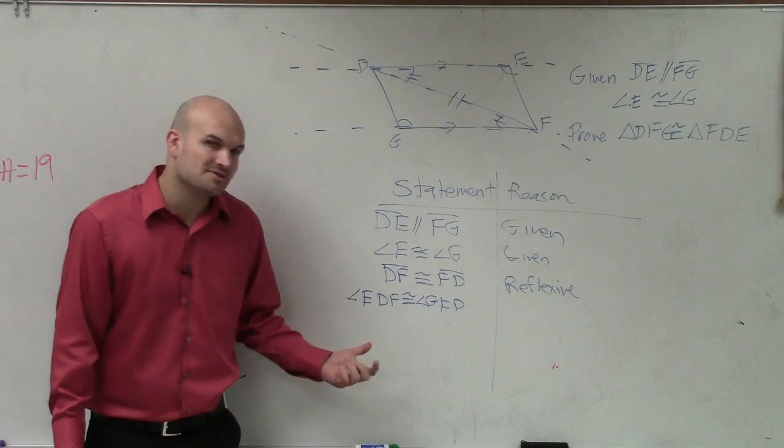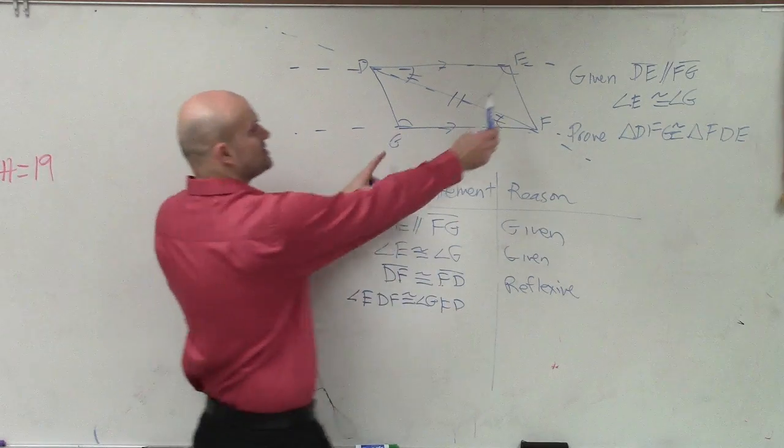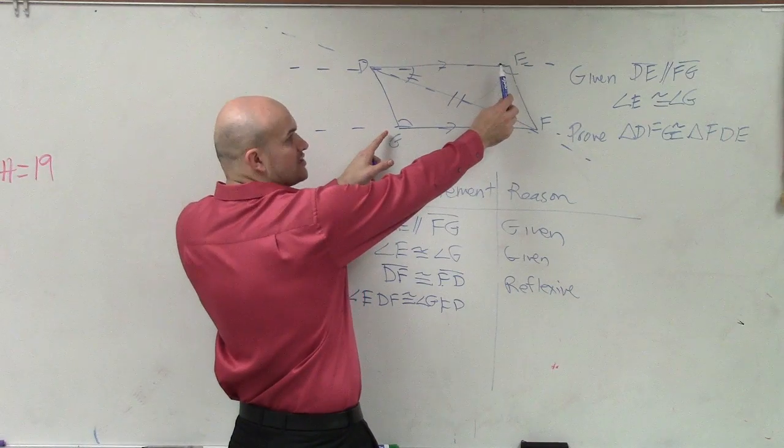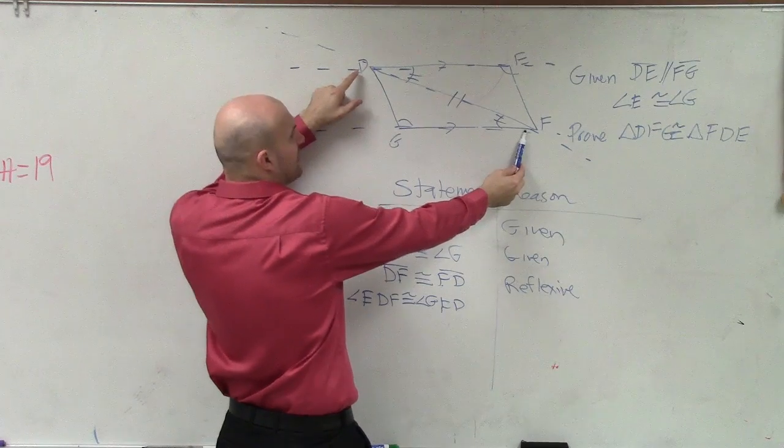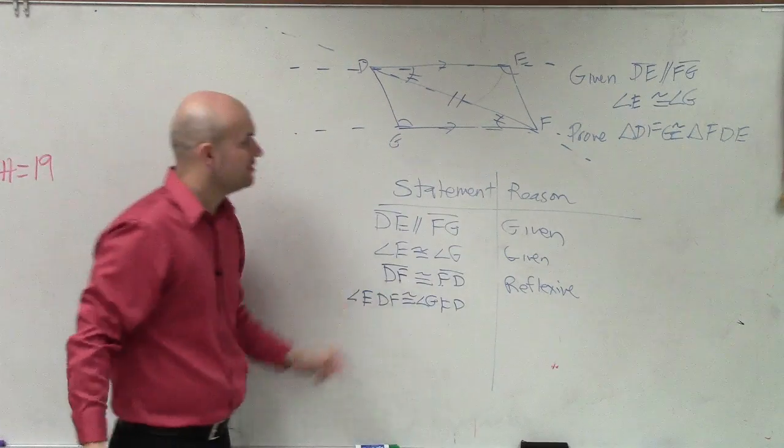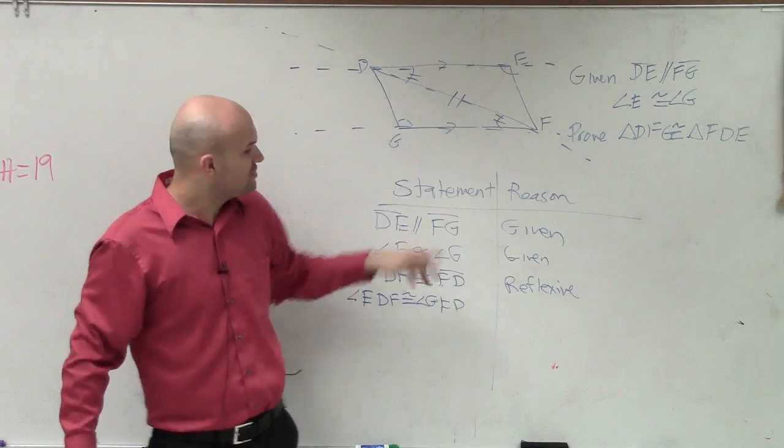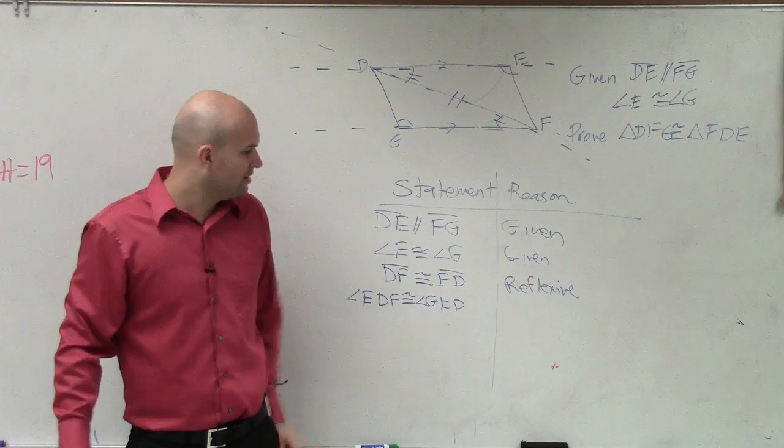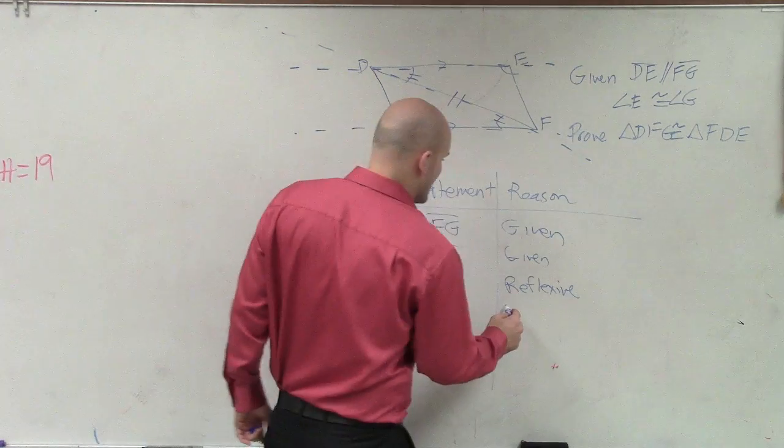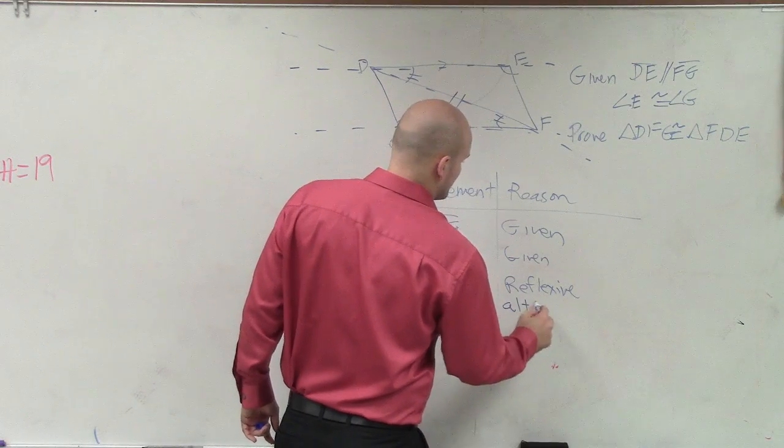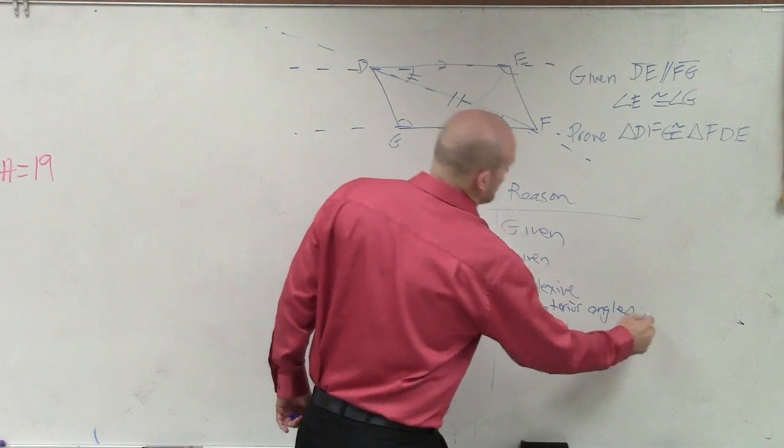So now I can say that angle EDF is congruent to angle GFD. And notice, ladies and gentlemen, when I write these, notice how I write them in the same order. E is corresponding to G. Do you guys understand how those two angles correspond to each other? Then D corresponds with F, right? And then you run back over to the other way. Because notice how these two angles are corresponding, these two angles are corresponding. So you have to make sure you write them in the correct order. And why are these two angles congruent? Because we have alternate interior angles.